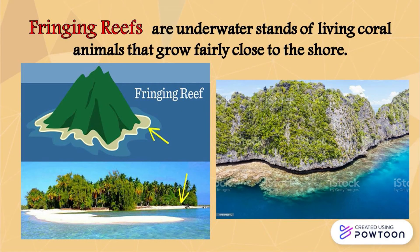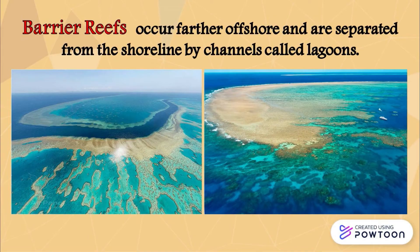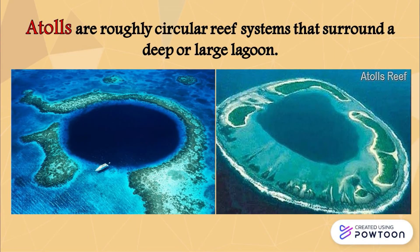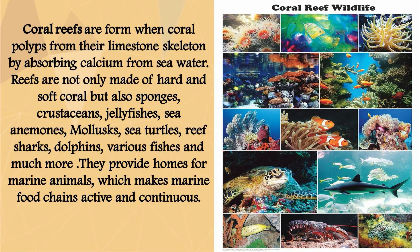Fringing reefs are underwater stands of living coral animals that grow fairly close to the shore. Barrier reefs occur farther offshore and are separated from the shoreline by channels called lagoons. Atolls are roughly circular reef systems that surround a deep or large lagoon. Coral reefs are formed when coral polyps form their limestone skeleton by absorbing calcium from seawater.